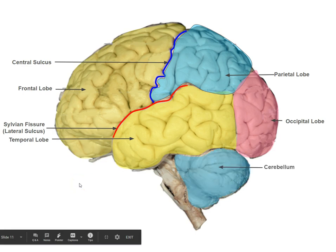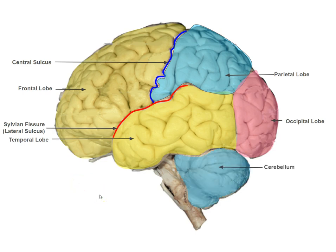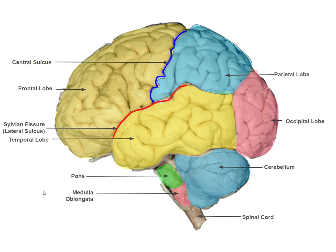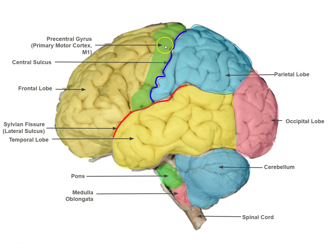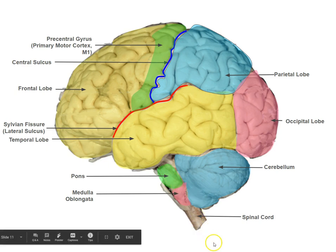Next up is the cerebellum, important for coordinating movements; the pons; the medulla; and the spinal cord. Now I'm going to show you some more functionally defined areas, two of which you've already seen. One is the precentral gyrus right here, which is also primary motor cortex — again the last part of cortex crucial for controlling movements. Signals from here get carried down axons into the brainstem, spinal cord, and out to the body.